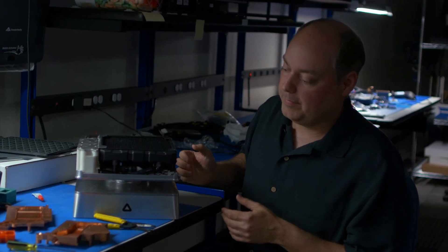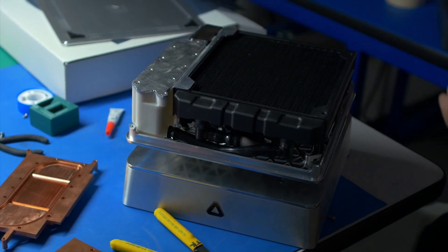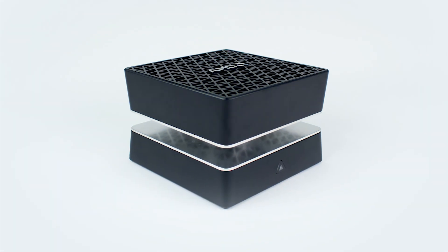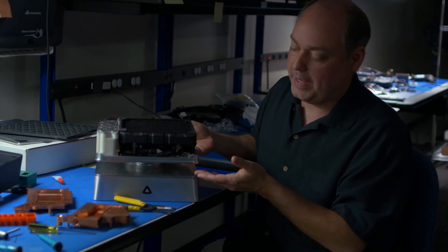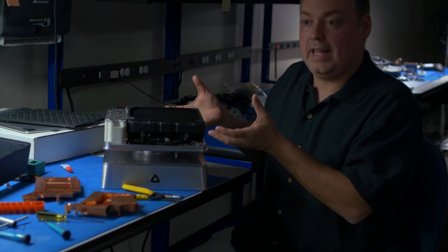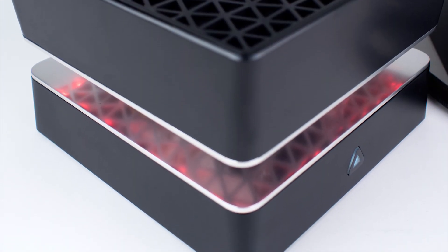So this is our prototype. In the final iteration, it will be painted a very nice black color. This interior will remain very reflective aluminum, and we'll have red lights that shine down on it, and it casts this really amazing pattern all around. Something that you've really never seen before.